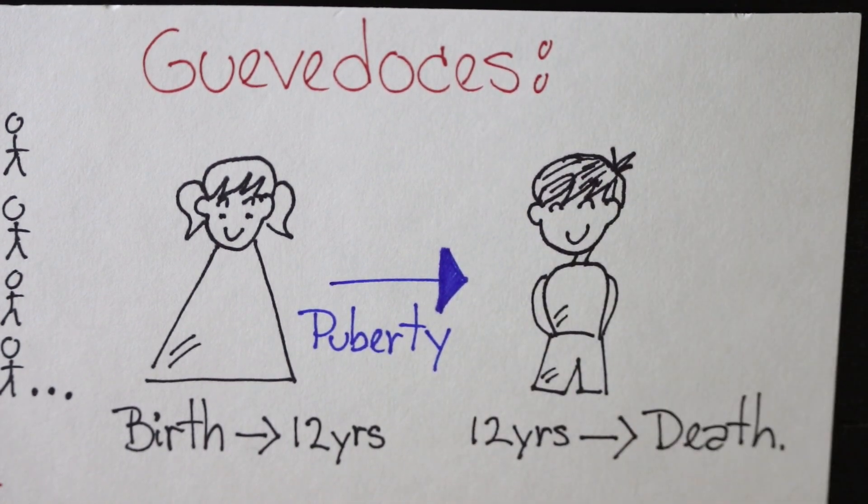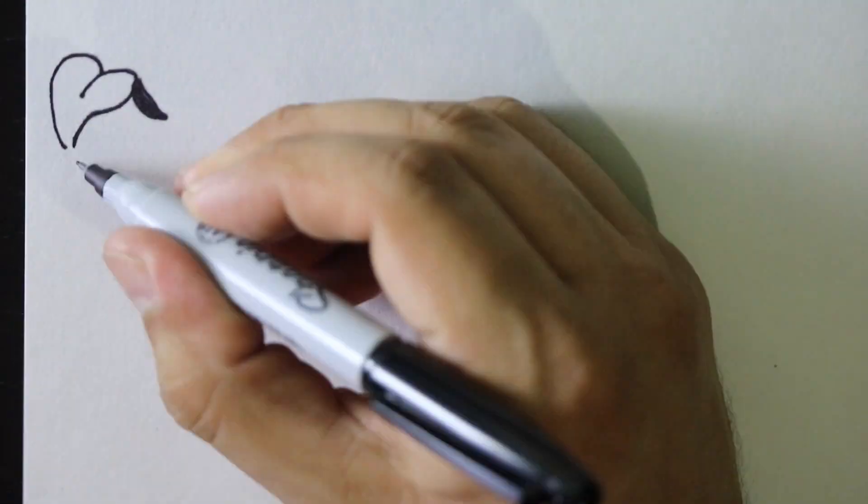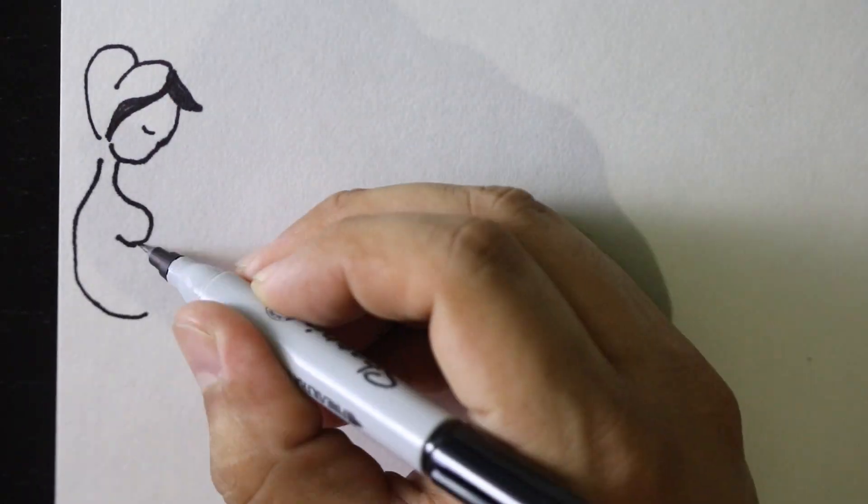How does this happen? When a baby is conceived, the 46 chromosome pair determines the sex.